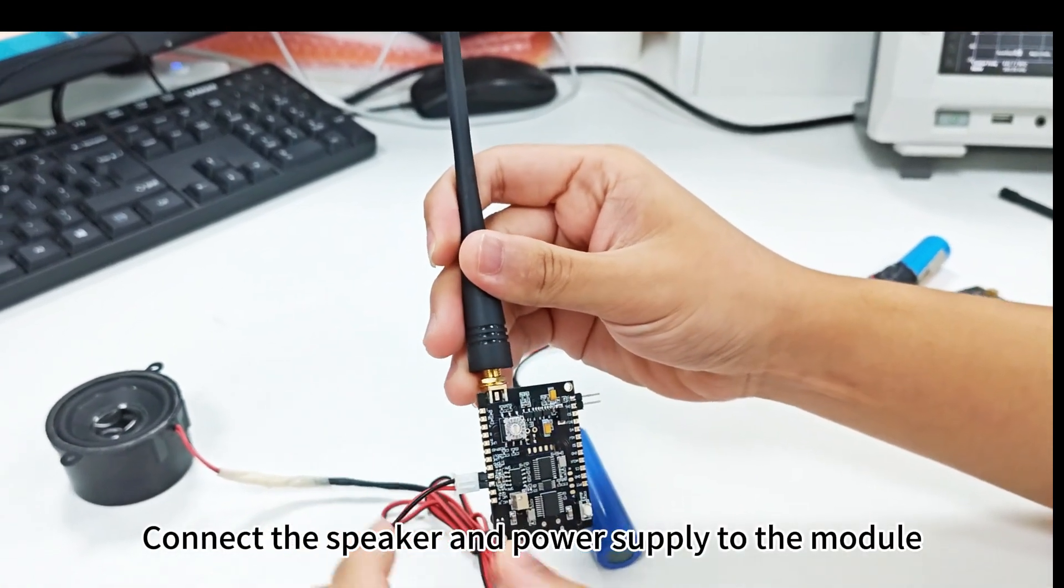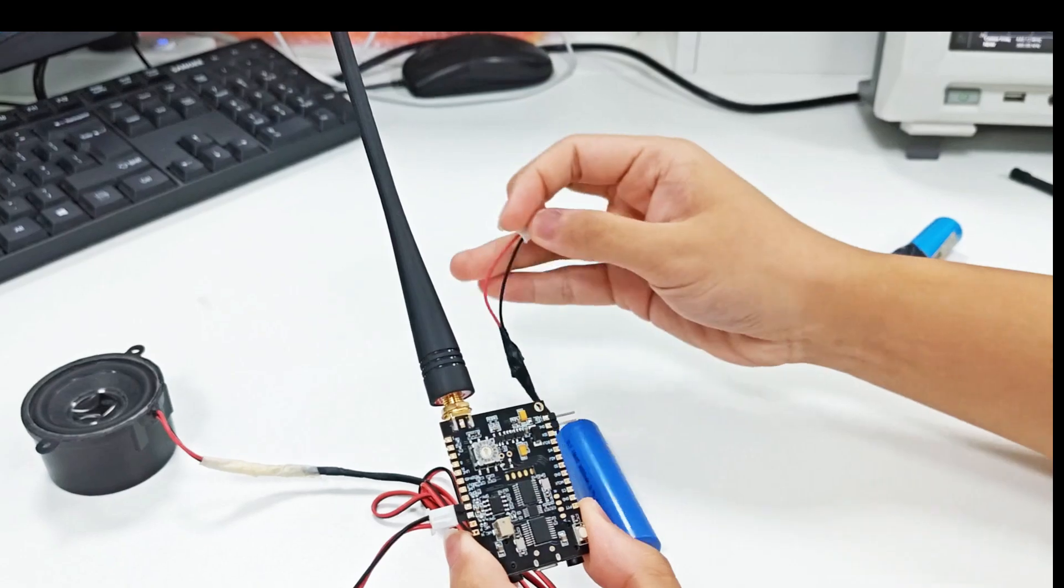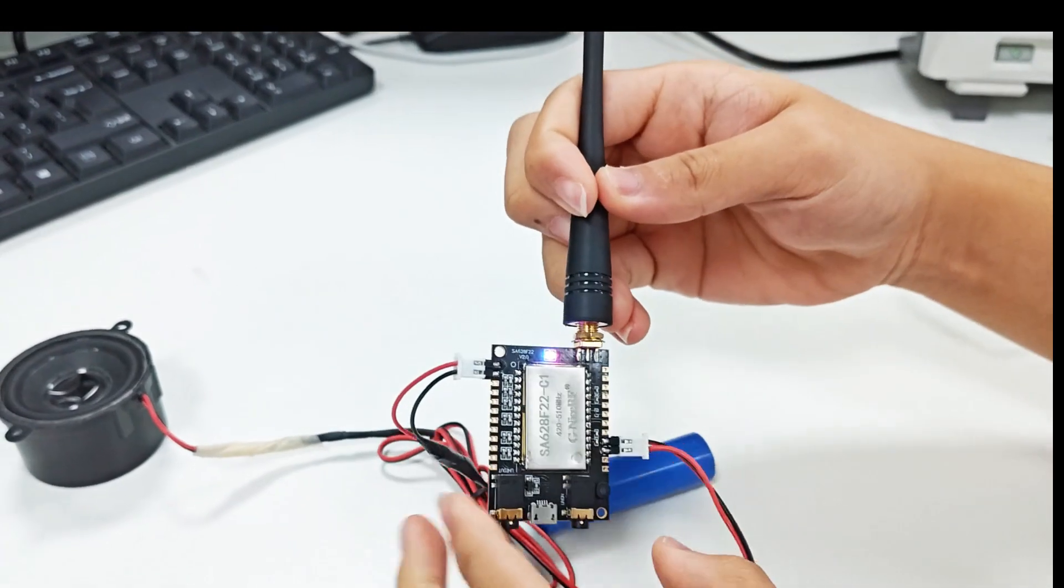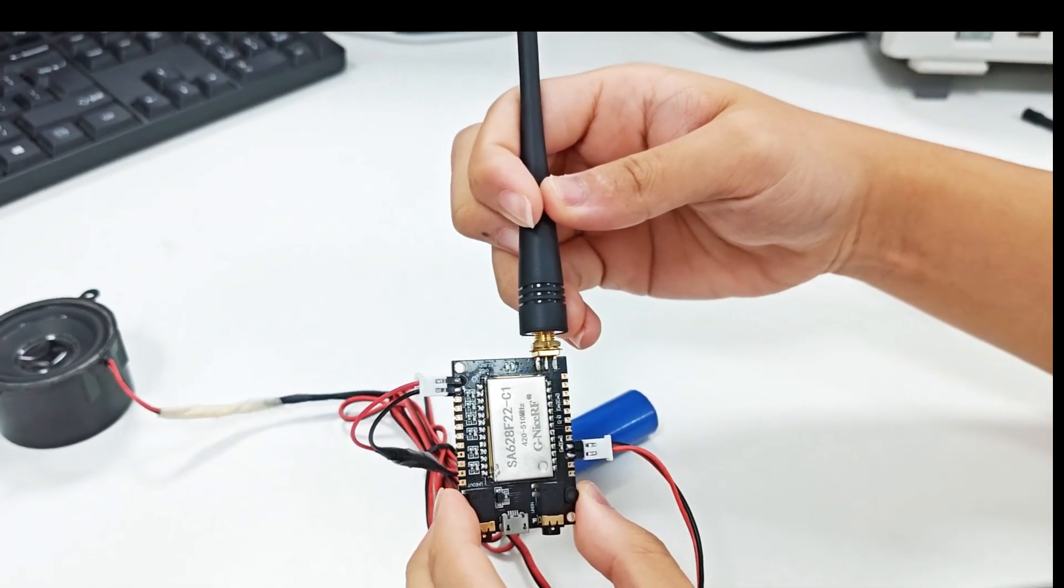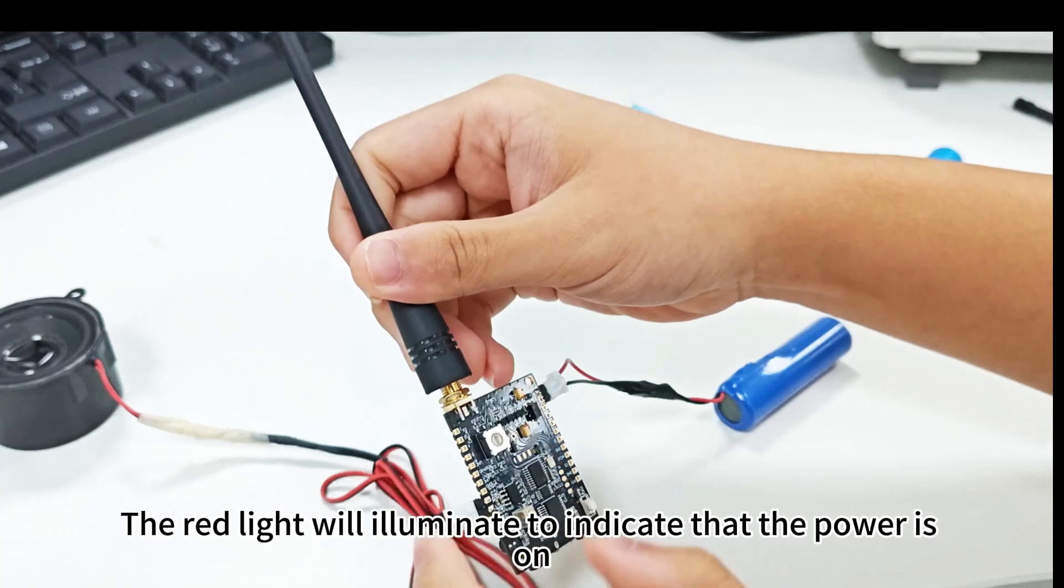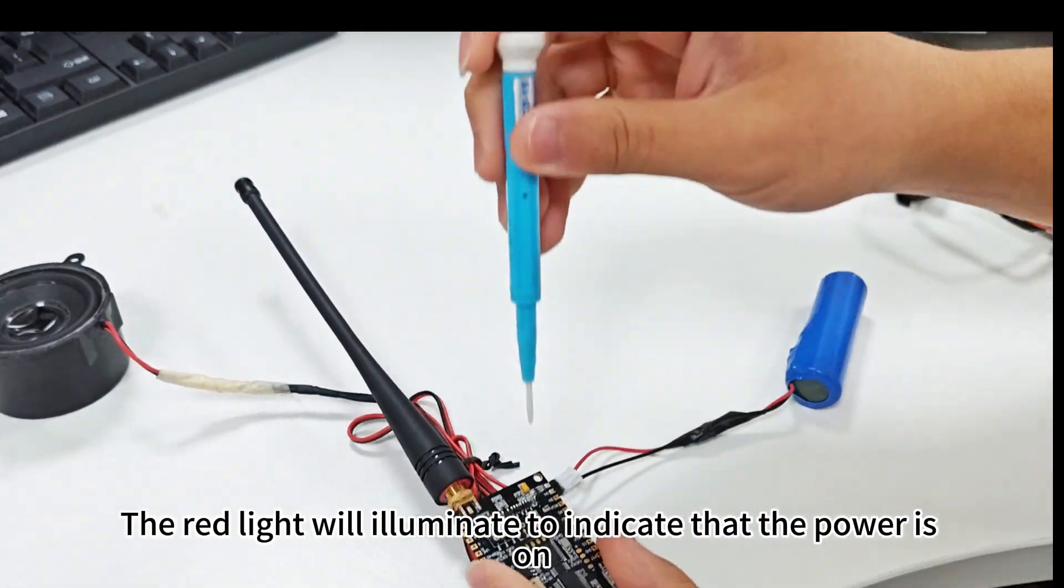Connect the speaker and power supply to the module. Then press the intercom transmit button. The red light will illuminate to indicate that the power is on.